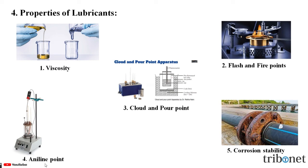The fourth property is aniline point. Aniline point of a lubricant oil is defined as the minimum equilibrium solution temperature for equal volumes of aniline and lubricant oil samples. It gives an indication of possible deterioration of lubricant oil in contact with rubber sealing. The fifth property is corrosion stability. Corrosion stability of a lubricant oil is estimated by carrying out a corrosion test. A polished copper strip is placed in the lubricant oil for a specified time at a particular temperature. A good lubricating oil should not affect the copper strip.